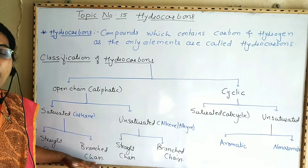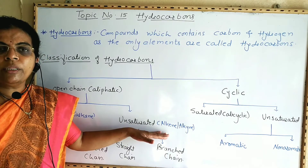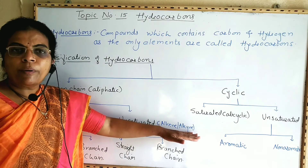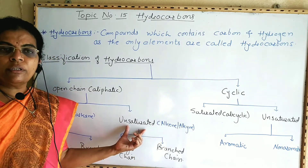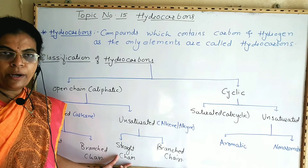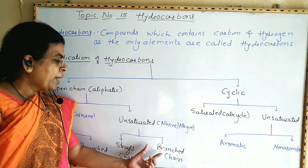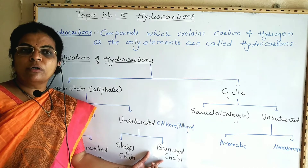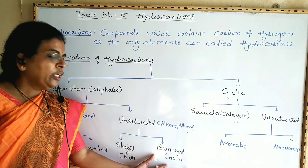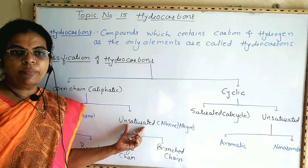In branched chain saturated hydrocarbons, the straight chain of carbon atoms is branched with another carbon-carbon chain. Then unsaturated hydrocarbons, which possess carbon-carbon double or triple bond in the molecule — alkenes in case of double bond and alkynes in case of triple bond — are further classified into straight chain unsaturated hydrocarbons, with a straight chain of carbon atoms, and branched chain unsaturated hydrocarbons, where the straight chain is branched with another carbon-carbon chain.